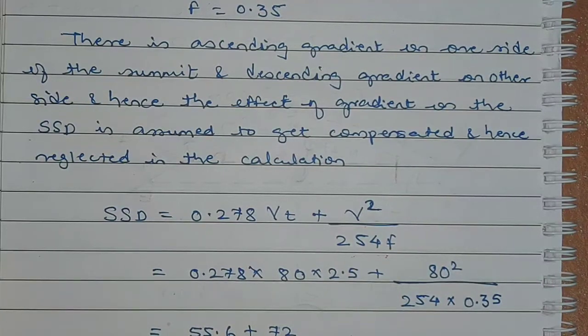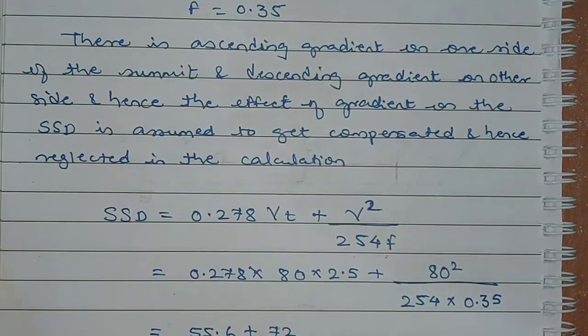So the stopping sight distance we get is 127.6 meters, approximately equal to 128 meters.